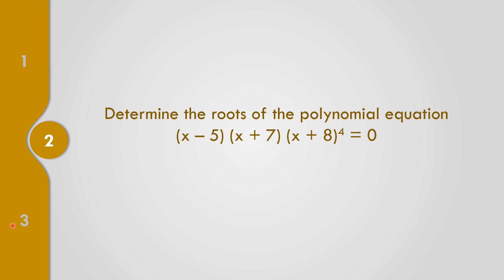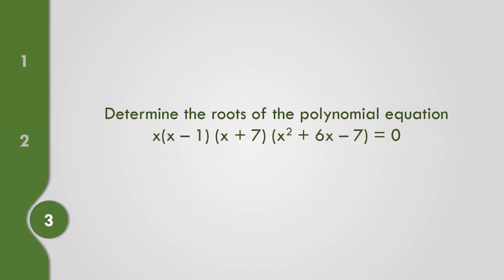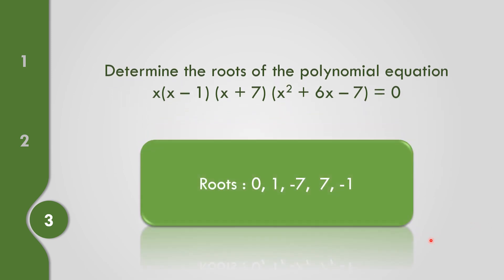Number 2: (X minus 5)(X plus 7)(X plus 8) to the 4th power equals 0. The roots are 5, negative 7, and negative 8 with multiplicity 4 because the exponent is 4. Number 3: X(X minus 1)(X plus 7)(X squared plus 6X minus 7) equals 0. The roots are 0, 1, negative 7, 7, and negative 1.